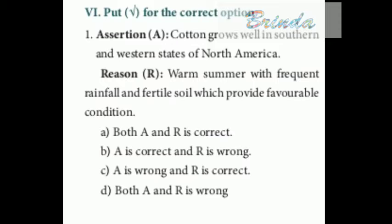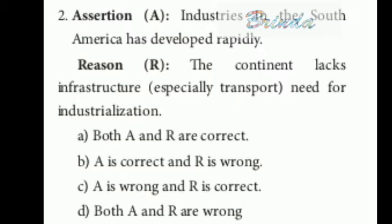Assertion and reason questions. First: Assertion — cotton grows well in the southern and western states of North America. Reason — warm summers with frequent rainfall and fertile soil provide favorable conditions. The answer is A: both assertion and reason are correct. Second: Assertion — industries in South America have developed rapidly. Reason — the continent lacks infrastructure, especially transport needed for industrialization. The answer is C: assertion is wrong and reason is correct.